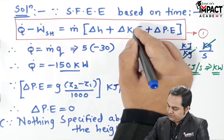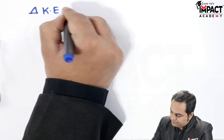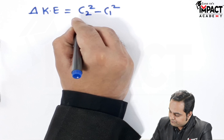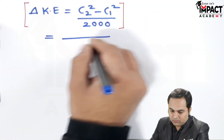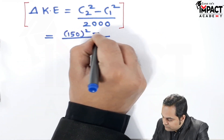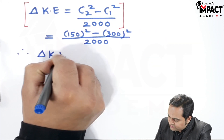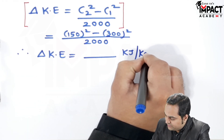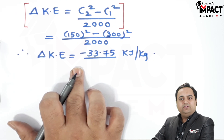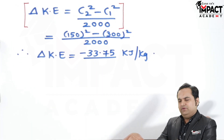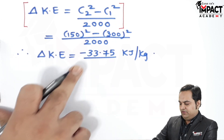Then we require the change in kinetic energy. The change in kinetic energy is given by (C2 squared minus C1 squared) divided by 2000. C2 is 150 and C1 is 300, divided by 2000. The change in kinetic energy comes out to be minus 33.75 kilo Joule per kg. The negative sign indicates a drop in kinetic energy — the inlet velocity was 300 m/s and exit velocity is 150 m/s, so there is a drop.